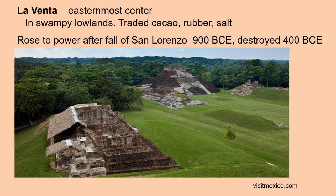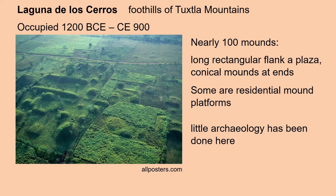The easternmost center, La Venta, was located in the swampy lowlands. They traded cacao, or chocolate, rubber, and salt. It rose to power after the fall of San Lorenzo in 900 before the Common Era, and it lasted about 500 years. Laguna de los Cerros, in the foothills of the Tuxtla Mountains to the north, was occupied between 1200 before the Common Era to Common Era 900. Little archaeology has been done here, but aerial photographs show nearly 100 mounds, including long rectangular mounds flanking a plaza with conical mounds at either end.